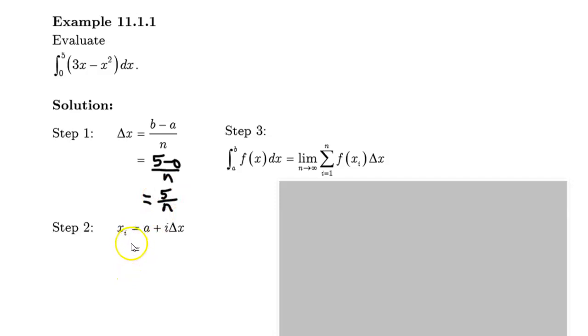And then xi, which is the different values of x at which the heights of those rectangles will be evaluated, is a + i delta x. We just figured out delta x was 5 over n, so i times 5 over n, and simplifying this is just 5i over n.